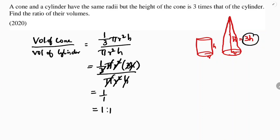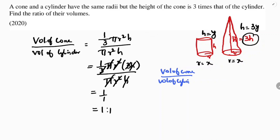Alternatively, consider radius as x and height of the cylinder as y. Then height of the cone becomes 3y. Writing this in the formula: volume of cone divided by volume of cylinder — volume of cone is 1/3 π x² multiplied by 3y.